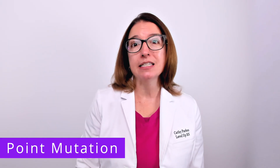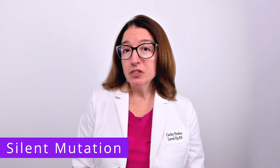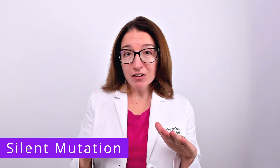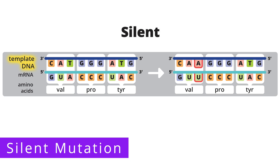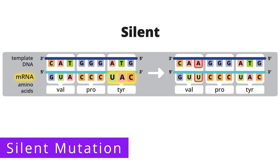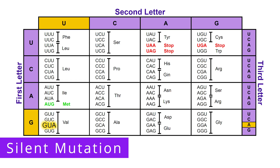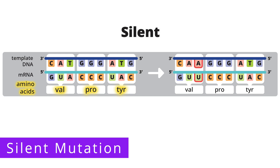With a silent mutation, we have a base substitution that does not alter the amino acid sequence due to degeneracy of the genetic code. The template DNA without the mutation has the nucleotides CAT, GGG, and ATG. When this gets transcribed into mRNA, this results in the nucleotides GUA, CCC, and UAC. Using the genetic code chart, we see that GUA codes for valine, CCC codes for proline, and UAC codes for tyrosine.